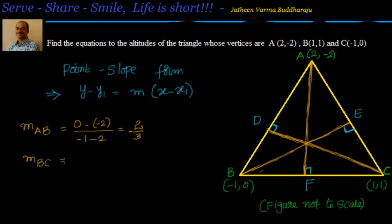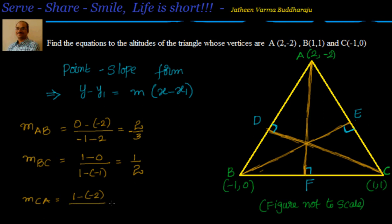Similarly, the slope of BC equals 1 minus 0 over 1 minus (-1), which equals 1/2. The slope of CA equals 1 minus (-2) over 1 minus 2, using the formula y2 minus y1 over x2 minus x1, which gives -3. Now we know the slopes of AB, BC, and CA.